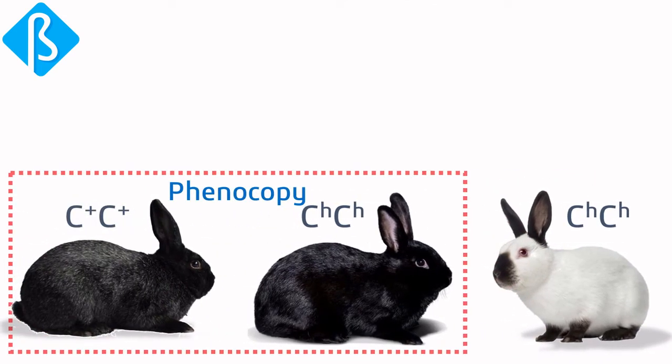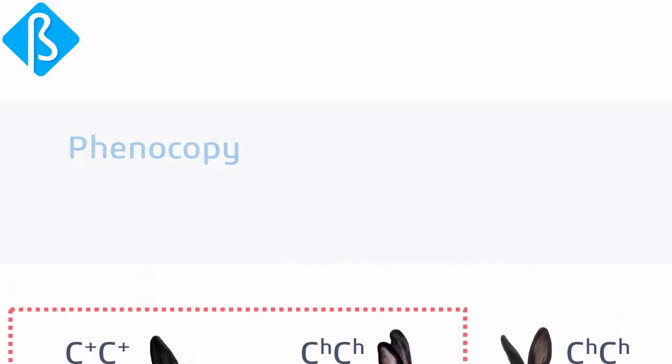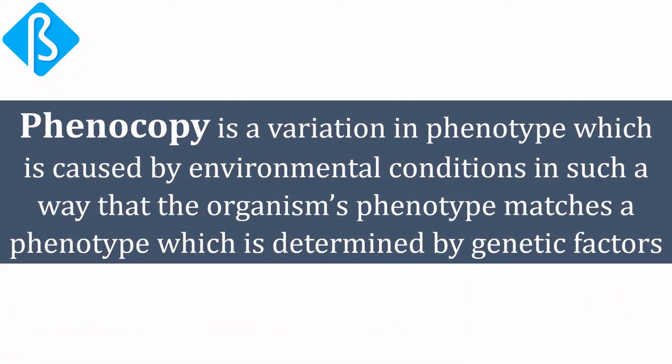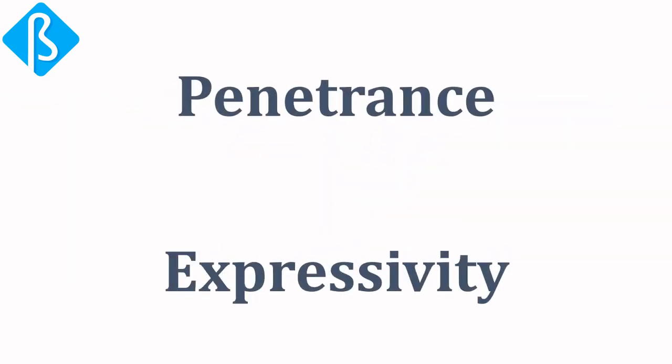Yet the black Himalayan rabbit resembles the wild-type rabbit, which means it is a phenocopy of the wild-type rabbit. Now you can understand the definition: phenocopy is a variation in phenotype which is caused by environmental conditions in such a way that the organism's phenotype matches a phenotype which is determined by genetic factors. Interesting, right? Let's move further.